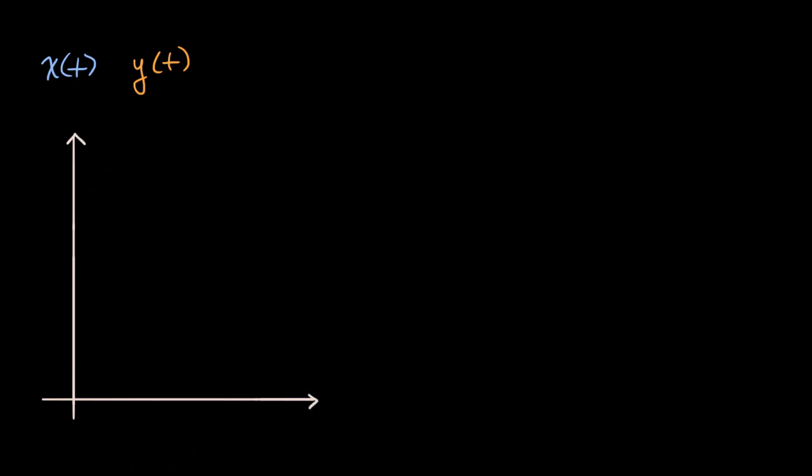We're going to think about what is the path that is traced out from when t is equal to a. So this is where we are when t is equal to a. So in this case, this point would be x of a, comma, y of a, that's this point.